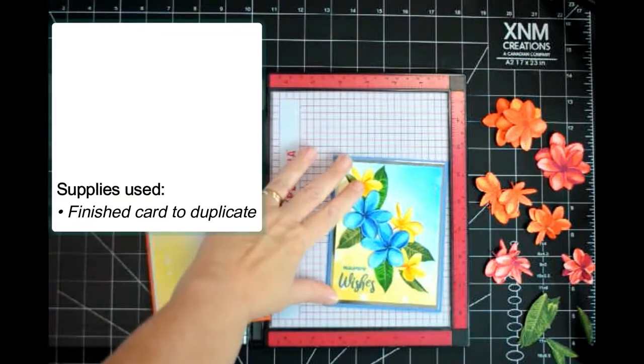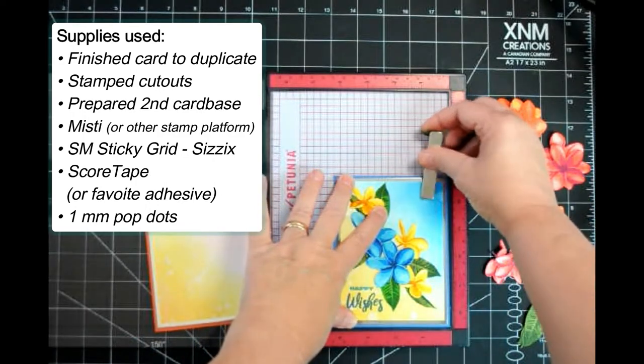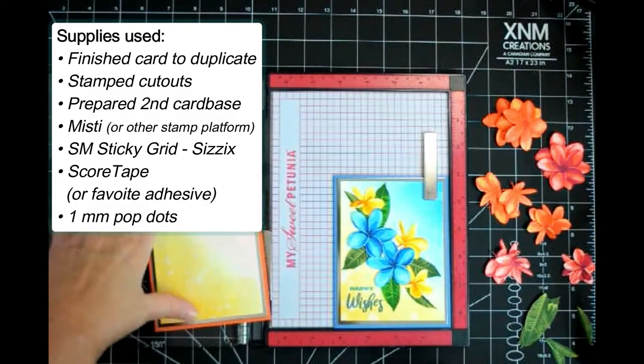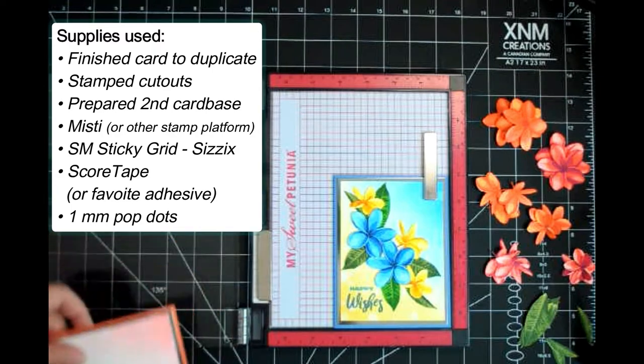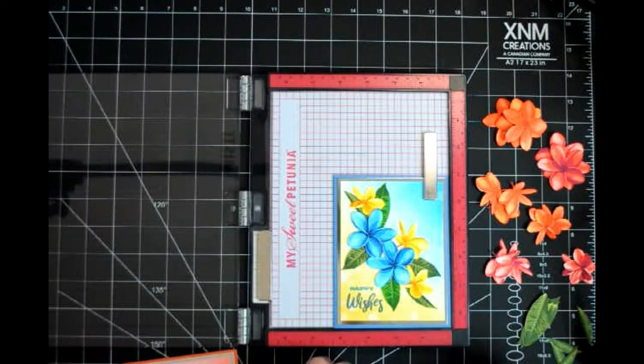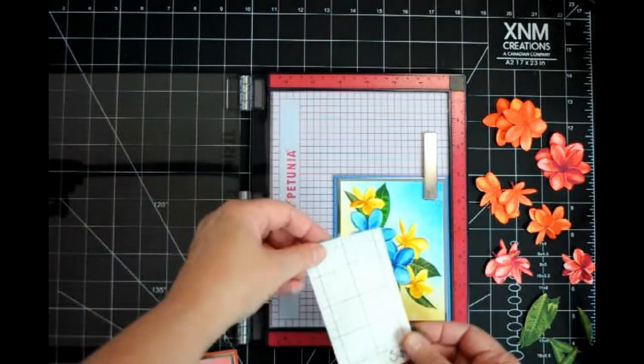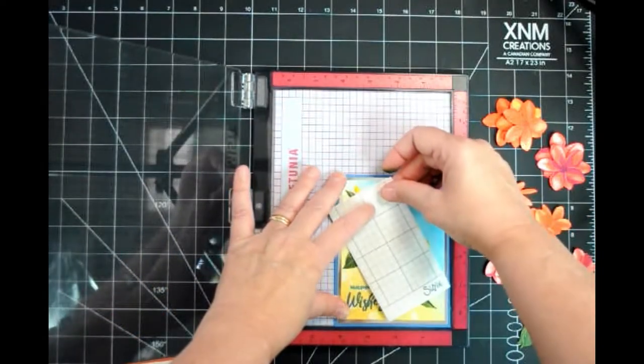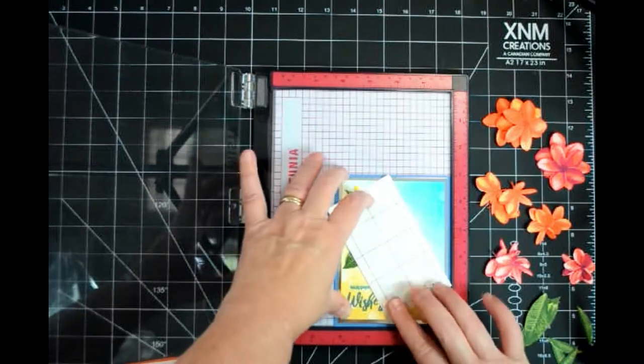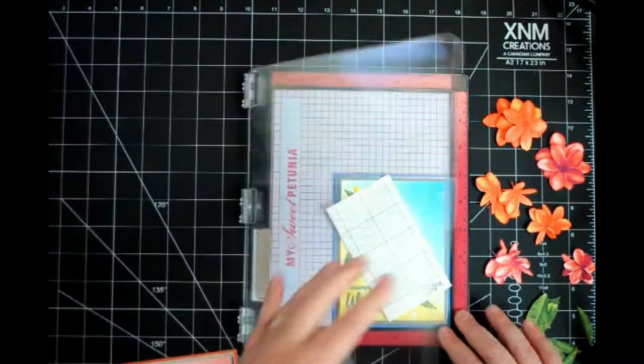I will be using the finished card as a template and place it into the stamp platform. You'll have better results if you start this technique with a fresh sheet of sticky grid paper. Place the sticky grid on top of the finished card and cover as much of the cutouts on the finished card as possible.